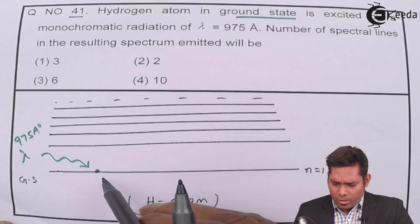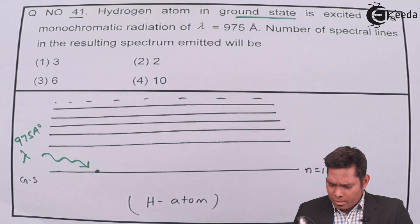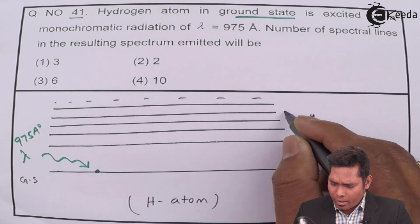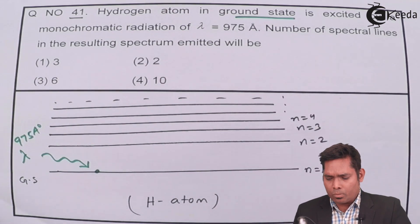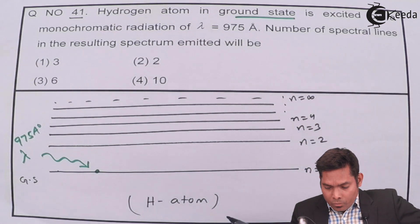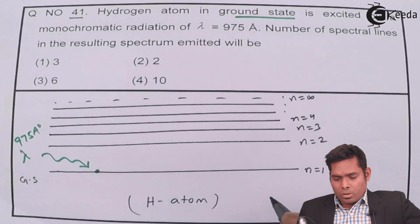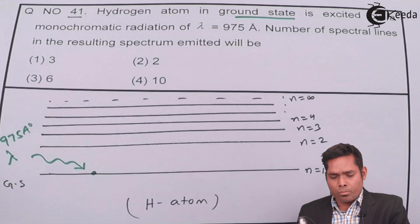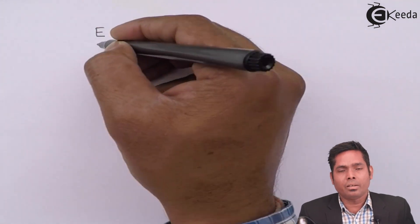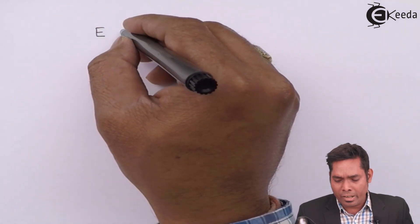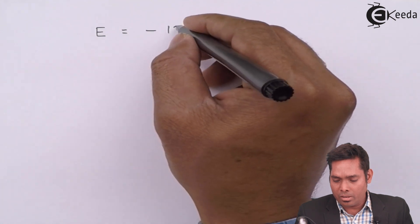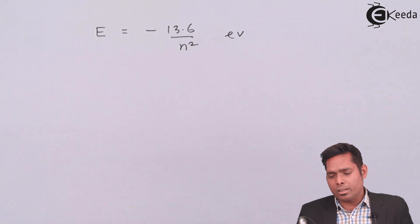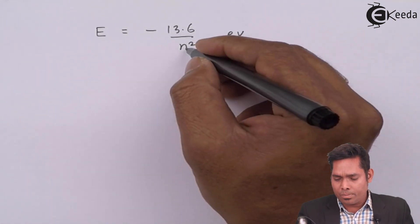Now, the energy levels are n is 1 here, n is 2 here, n is 3 here, n is 4, this one is 4, 5, so on, up to infinity. Now, we know the formula for energy in any energy level. For hydrogen atom, from Bohr's theory, we have found that the energy level E for any orbit is minus 13.6 divided by n square electron volt. This is the expression for energy in electron volt, where n stands for the number of orbits.